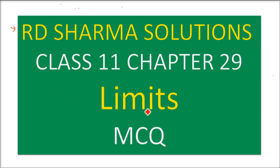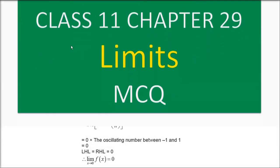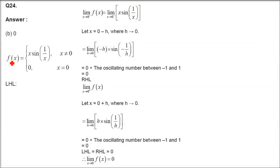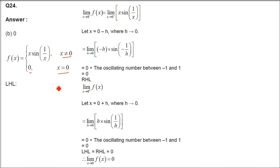This is R.D. Sharma solution class 11 chapter 29, limits MCQ. f(x) equals x·sin(1/x) when x≠0, and 0 when x=0. So 0 is our critical point and two values are given. We have to find the limit as x tends to 0 of f(x).